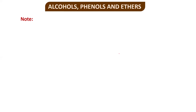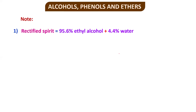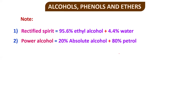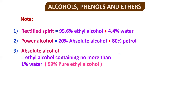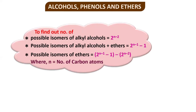Some important standalone definitions: Rectified spirit is 95.6% ethyl alcohol with 4.4% water. Power alcohol is 20% absolute alcohol (without water) and 80% petrol. Absolute alcohol is ethyl alcohol containing no more than 1% water — it is approximately 99–99.9% pure ethanol. These definitions are specific to alcohols only.